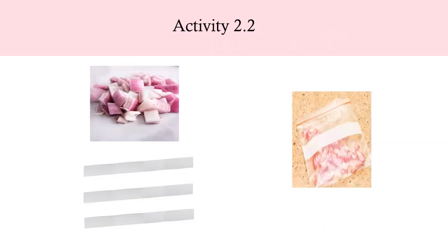The first step is to take some finely chopped onions in a plastic bag along with some strips of clean cloth. Then tie up the bag tightly and keep this bag overnight in the fridge.